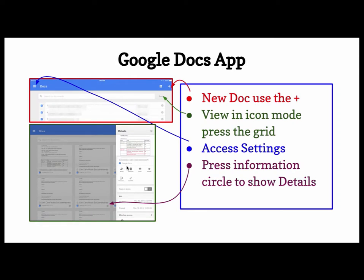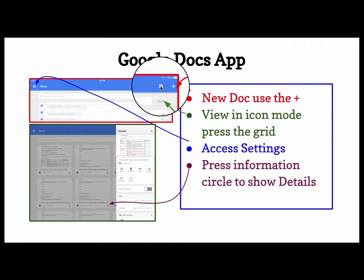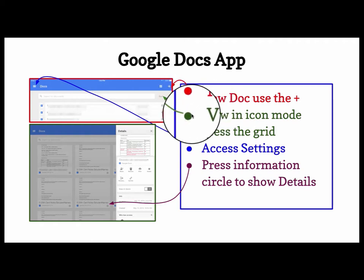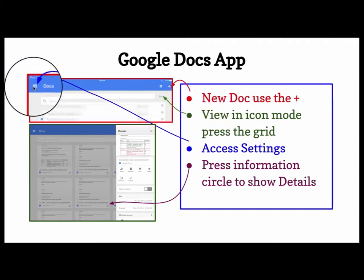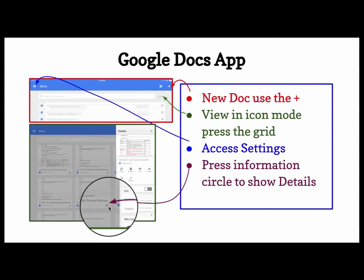Google Docs app. To create a new doc, simply click on the plus sign. You can view in icon mode by pressing on the grid. You access the settings under the three lines, and again you press on the eye for more information under the details.